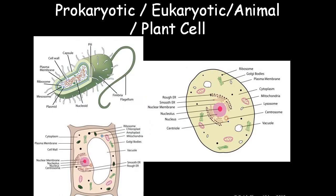This is the prokaryotic cell — a bacterial cell which has pili, fimbriae, and flagellum. These act as motile and non-motile structures. In terms of outer covering, we have the capsule, cell wall, and plasma membrane. Internally, within the cytoplasm, we have ribosomes, mesosomes, plasmids, and nucleoid. The nucleoid is a highly coiled structure.